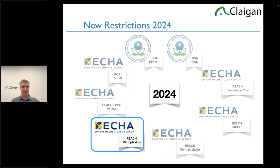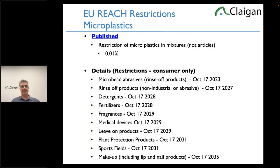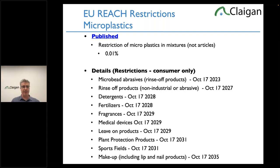Moving from POP to REACH: many things that end up in POPs start as REACH restrictions, because the REACH restriction process is more straightforward. For microplastics: the ban was published at the start of October. It bans microplastics in mixtures — not necessarily physical products — at 0.01%. Micro-abrasive beads in consumer products are already banned. The ban on rinse-off products that are not makeup kicks in October 17, 2027.